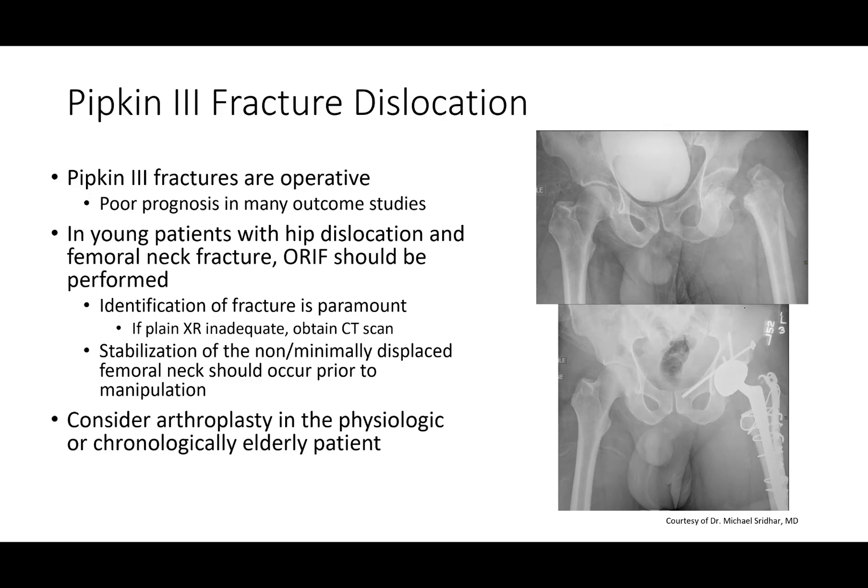Pipkin 3 fractures are frequently operative — you have a femoral neck fracture. In a young patient, you're going to have to do ORIF. Identifying these fractures is paramount, so make sure you don't miss a fracture and displace it. If it is minimally displaced and you catch it, you should consider stabilizing it before doing the closed reduction to prevent displacement. If you have an elderly patient with a displaced Pipkin 3, this may not be the case to try and fix the femoral neck — these may need to be replaced.